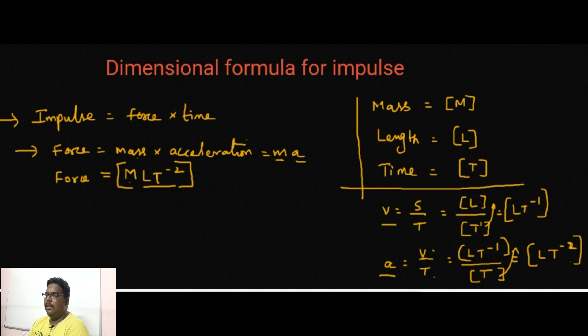So force is the product of mass and acceleration. Mass is written as capital M and acceleration is L T power minus 2, and the combination represents force.